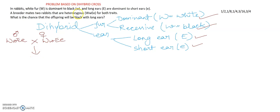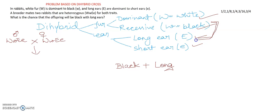So what is the chance that the offspring will be black with long ears? We need to find the version that is black plus long. You can see the options on screen: 1/2, 1/8, 1/4, 3/16, and 3/4.